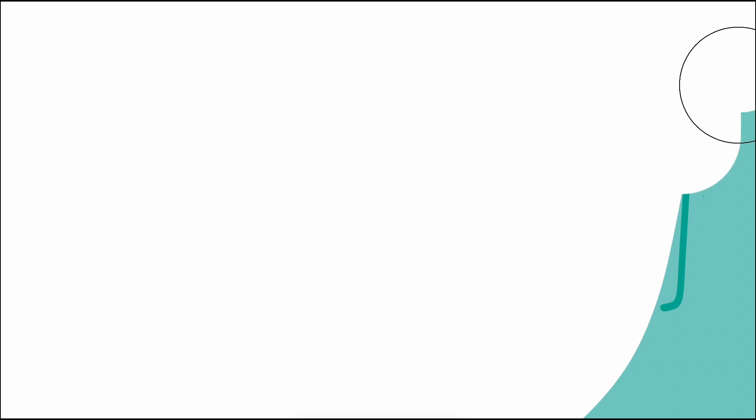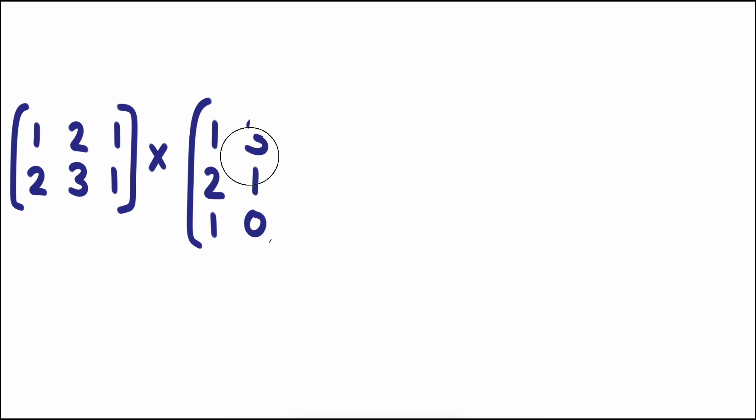There's also matrix multiplication, which is when two matrices are being multiplied. Unlike matrix addition, these matrices do not need to have the exact same dimensions to perform matrix multiplication, but the number of columns in the first matrix must be equal to the number of rows in the second matrix.